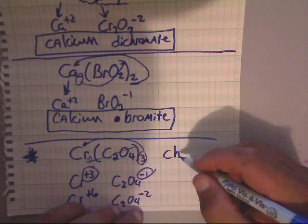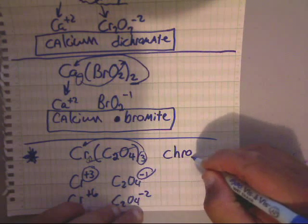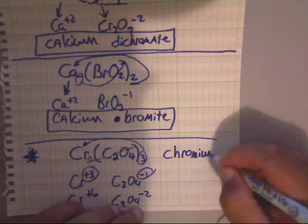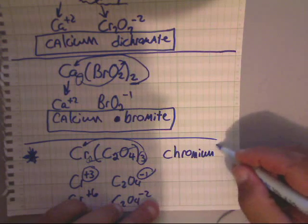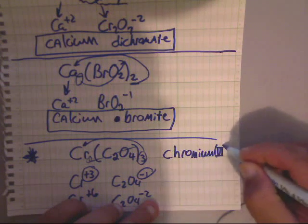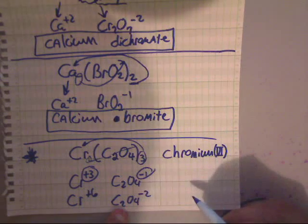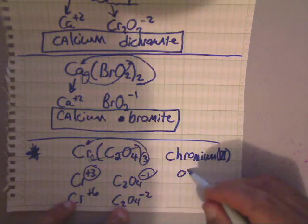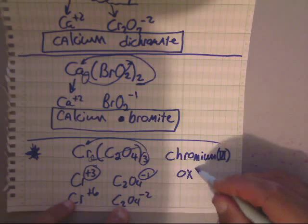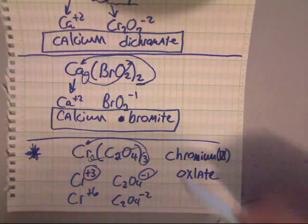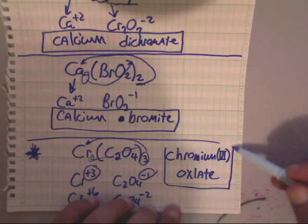That way, when you look at this, you know that you have chromium. Chromium, C-H-R-O-M-I-U-M, and it's 6. So, that's VI. So, that's 6. And then this thing, it is oxalate. O-X-A-L-A-T-E.